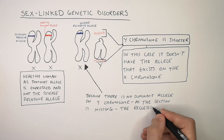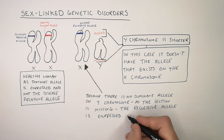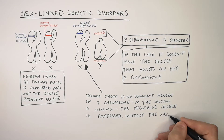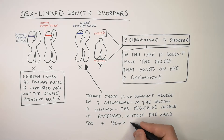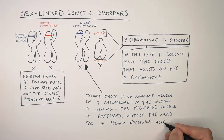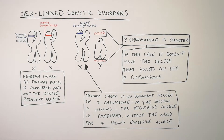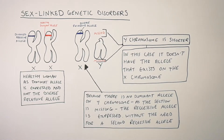Therefore, the recessive allele is expressed without the need for a second recessive allele — where normally you would need two recessive alleles for the disease to be expressed. In this case, he only needs one because there's no dominant allele to cancel the effects of the recessive allele.